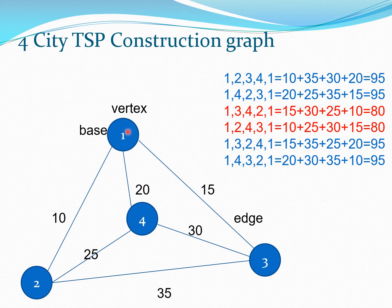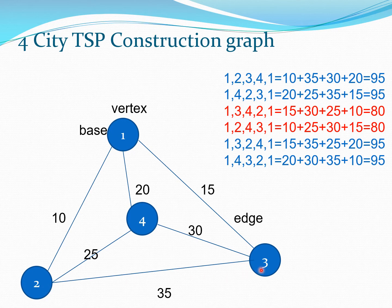The second path we consider is 1 → 4 → 2 → 3 → 1. That is also a legitimate path — no city is visited more than once and the salesman returns to the base. The length is: 1 to 4 = 20, 4 to 2 = 25, 2 to 3 = 35, and 3 to 1 = 15. So the total is 20 + 25 + 35 + 15 = 95.